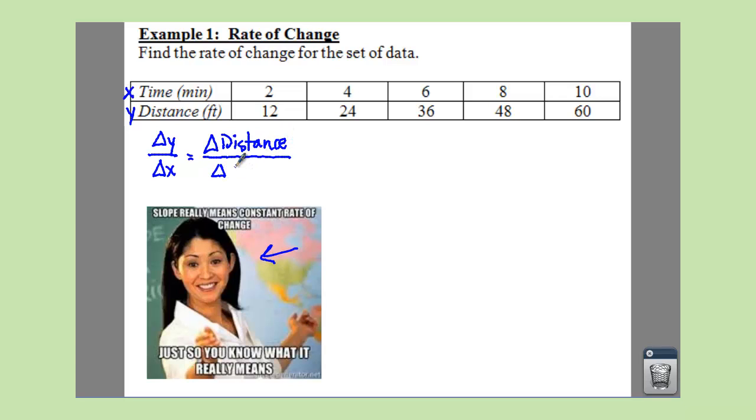Over the change in our time, which is in minutes. What we're going to look at is we're going to choose any two pairs. It doesn't matter what two points we choose. I'm going to choose 4, 24 and 8, 48 down here. Keep in mind this is really the ordered pair 4 comma 24 and this is your pair of 8 comma 48.